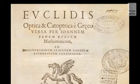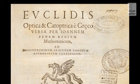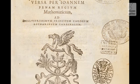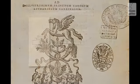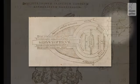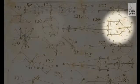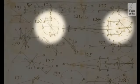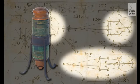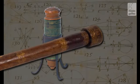The attempts to understand the nature of light and the mechanism of vision date back to antiquity. However, the main efforts to define the foundations of theoretical optics did not begin until the 17th century, when microscopes and telescopes were gaining acceptance as essential instruments for scientific observation.